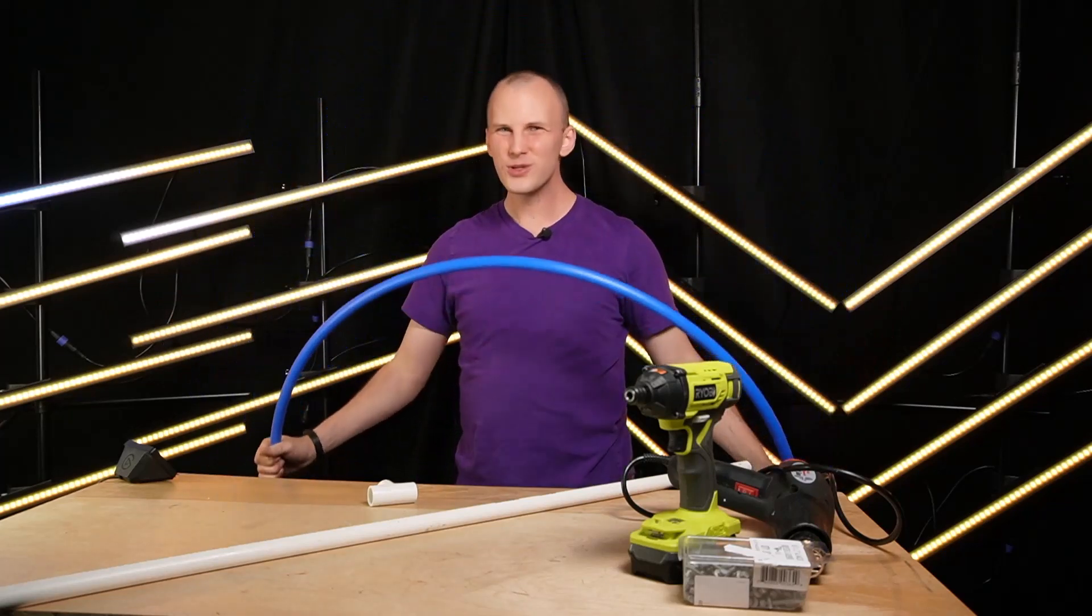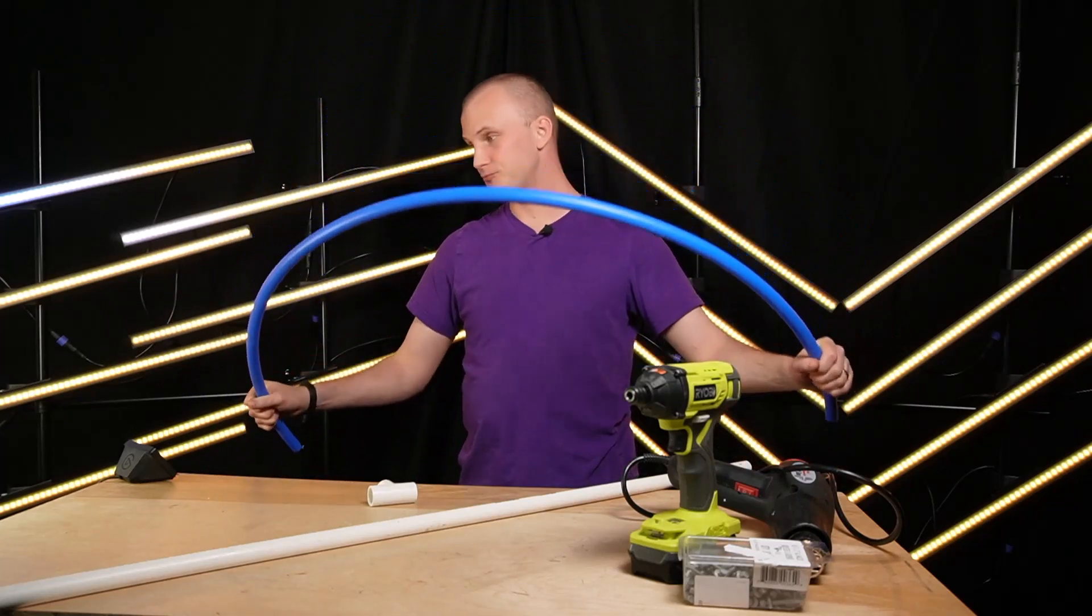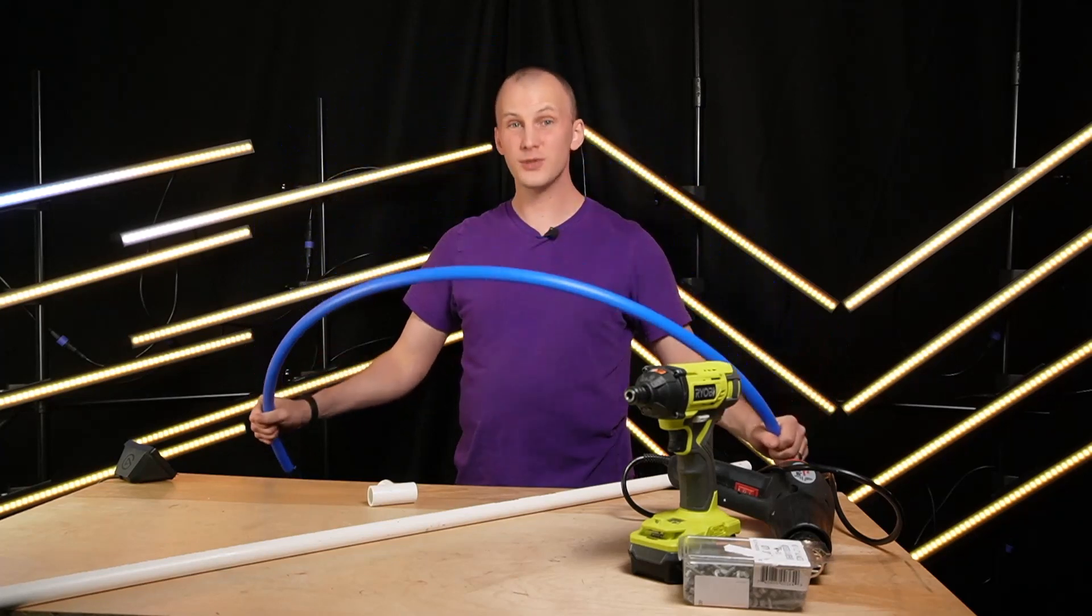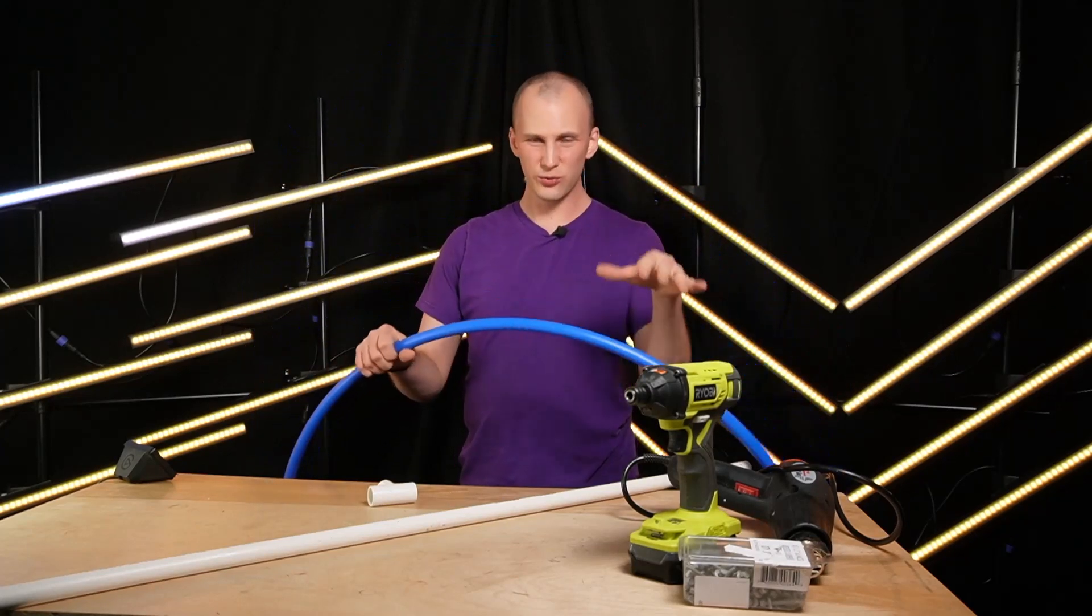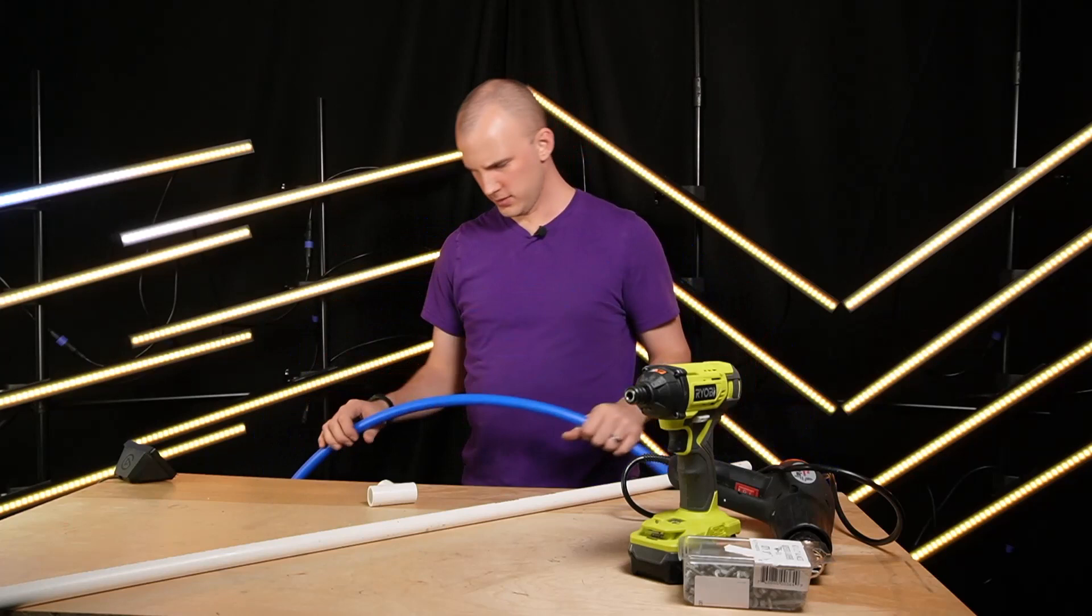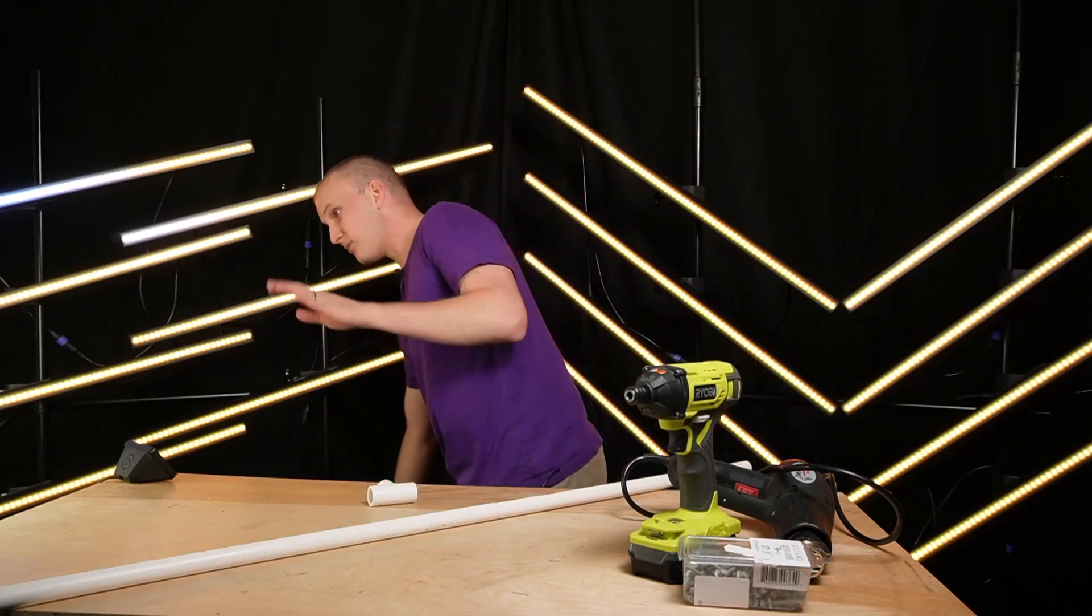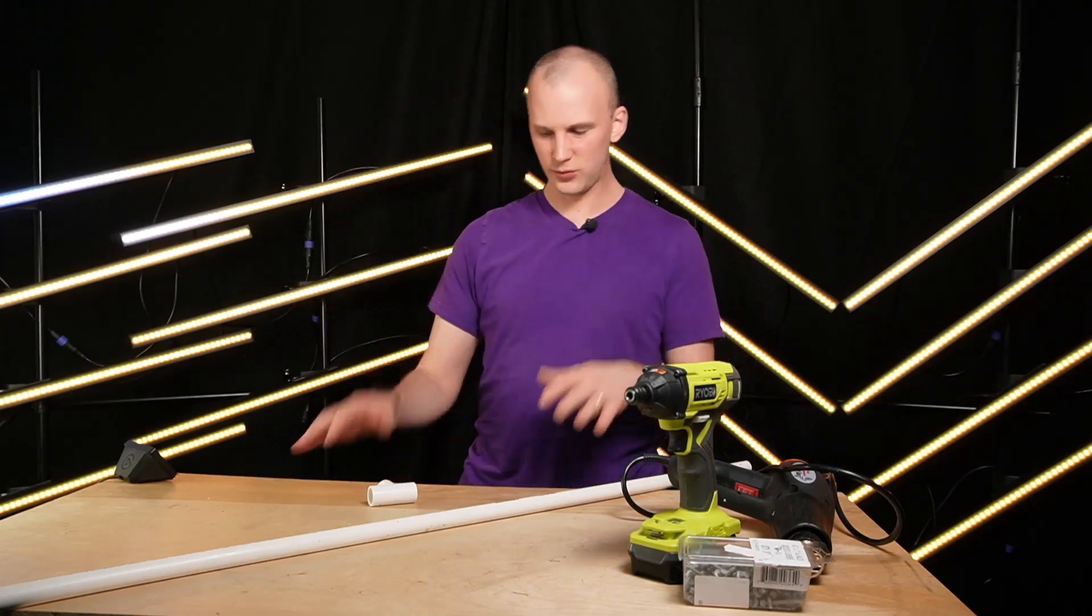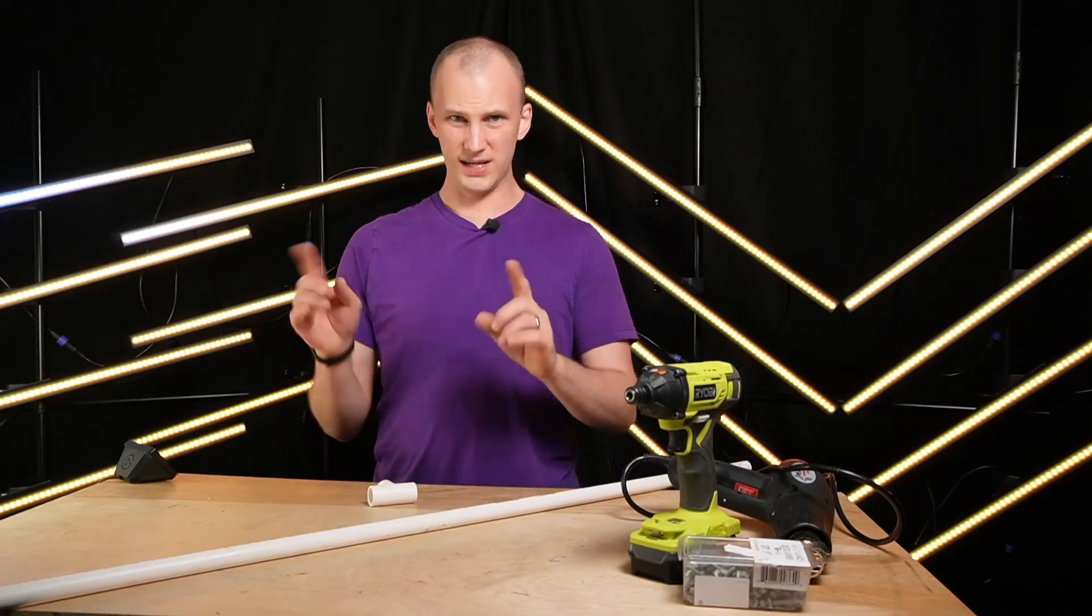And it curves and it bends really easily, but still has the rigidity to hold the coro. Okay, so I looked at a bunch of different posts and kind of tweaked them and made it my own to come up with this.